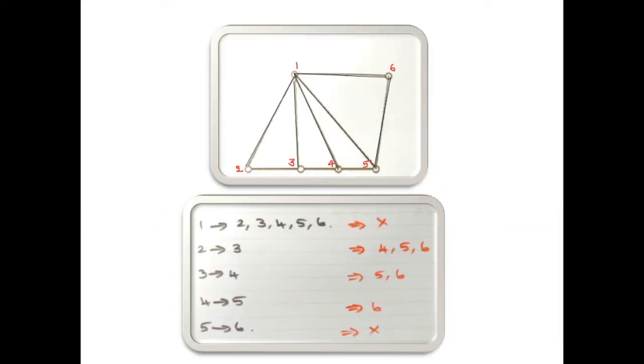Let's see examples of closure of graphs. Here you can see a graph which consists of six vertices.